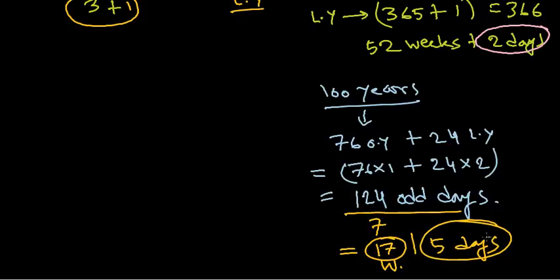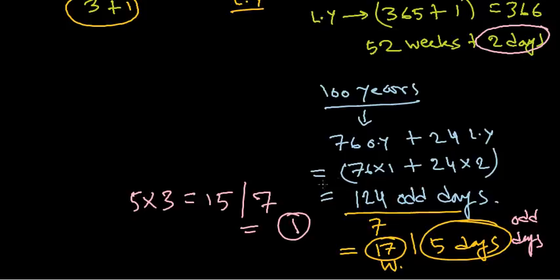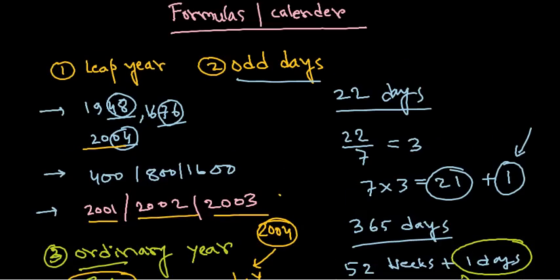So in 100 years there are 5 odd days. In 200 years it's 5×2=10; dividing by 7 leaves 3, so 3 odd days. In 300 years, 5×3=15; dividing by 7 gives 1 odd day. You can similarly calculate the number of odd days for 100, 200, 300, 400 years and more. That's the way to calculate odd days and understand the leap year concept.